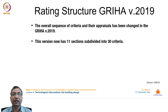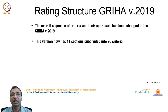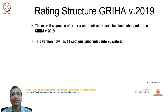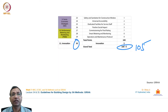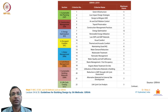GRIHA version 2019 has revised the overall sequence of criteria and appraisals. This version now has 11 sections subdivided into 30 criteria. The criteria set includes sections, criteria numbers, criteria names, and maximum points allocated. It starts from sustainable site planning and progresses through construction management, energy optimization, occupant comfort, and more.